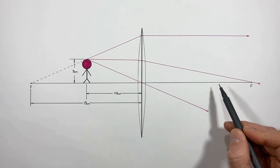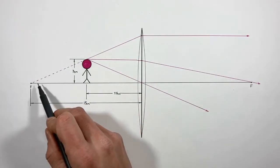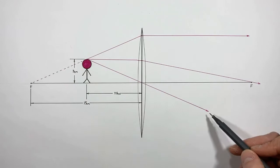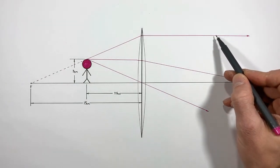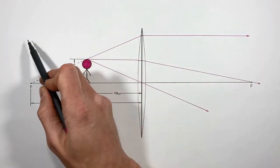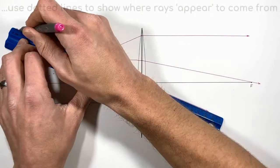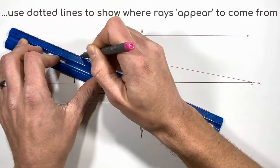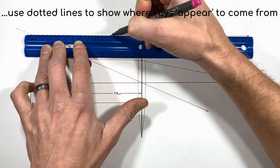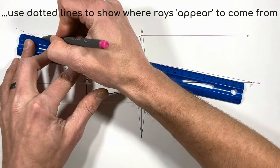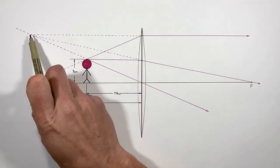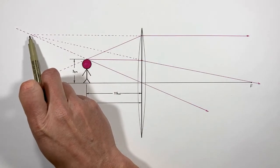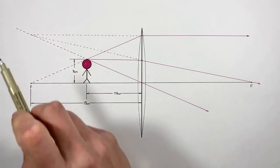These three rays don't appear to converge anywhere on the far side of the lens, but an image is in fact formed. To find out where this image is formed, we need to back up to this side of the lens and backtrack along each of these three rays to see where they appear to converge. These three rays appear to converge at this point right here, and this is where the top of our image will form.